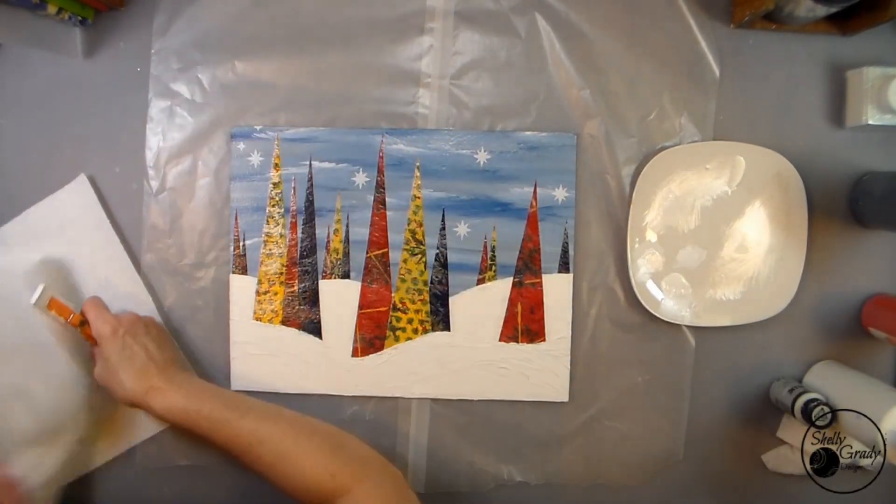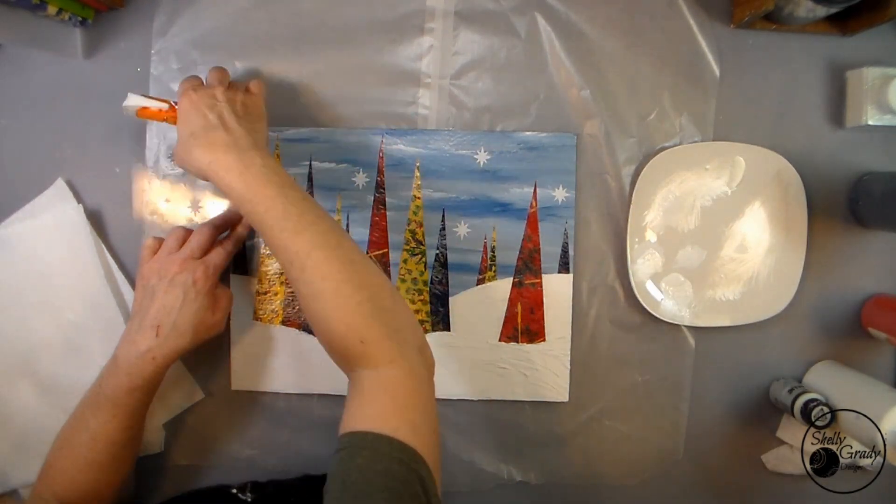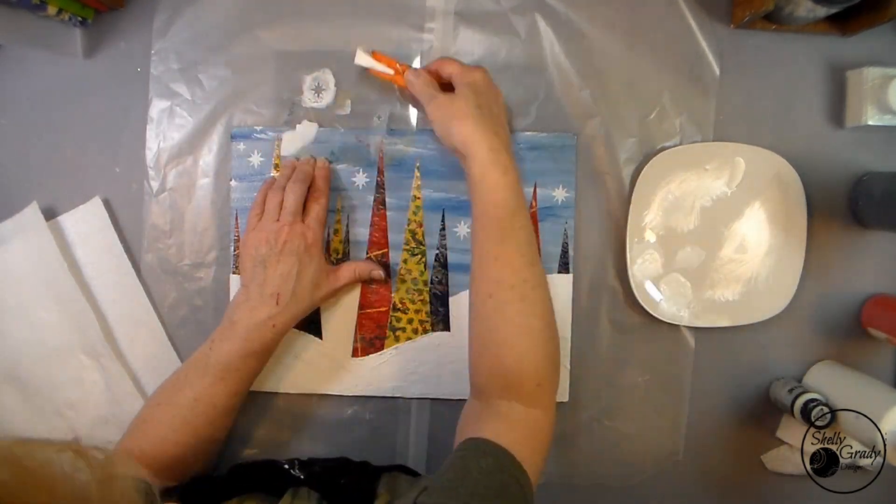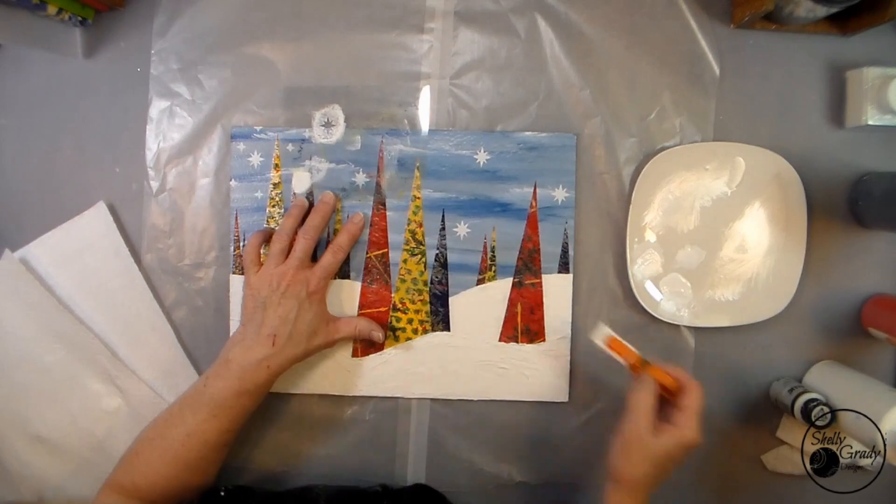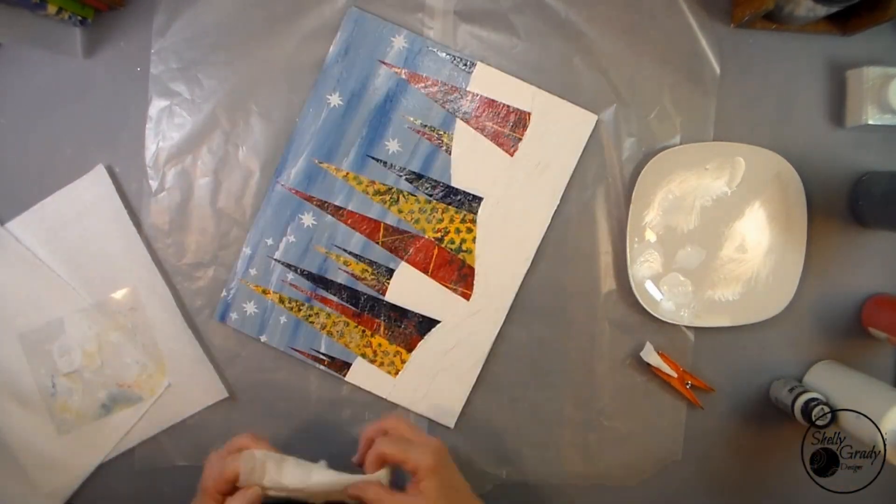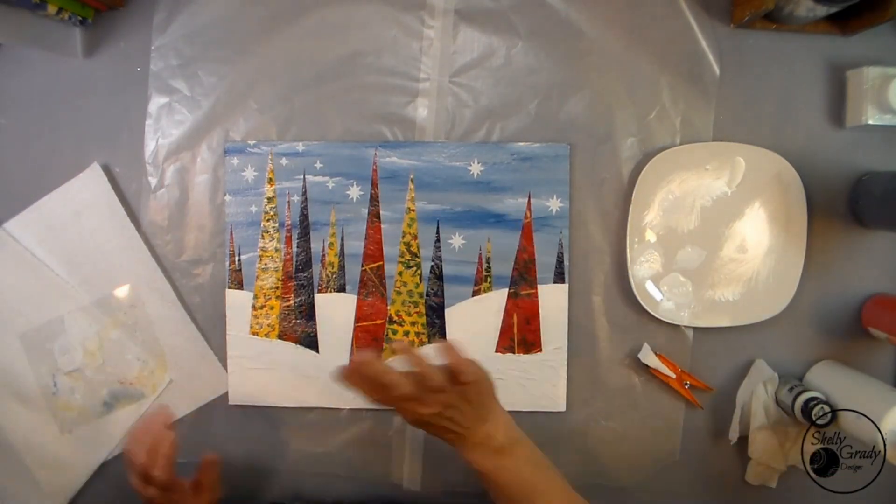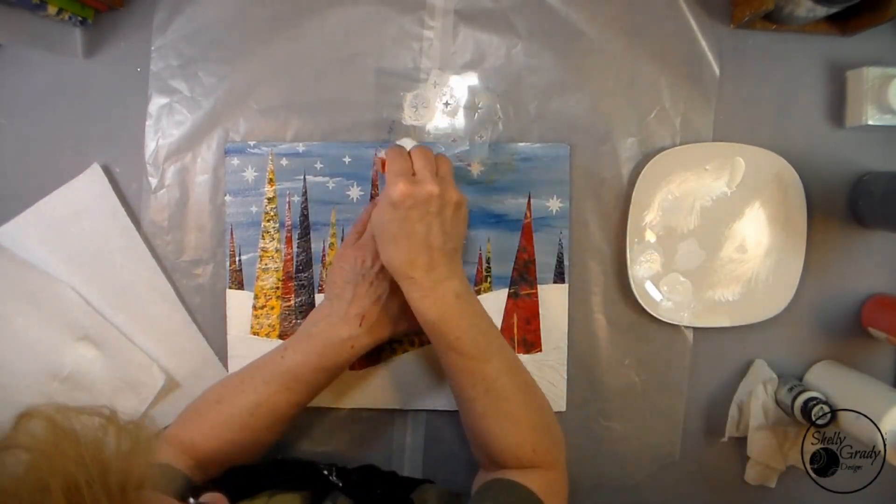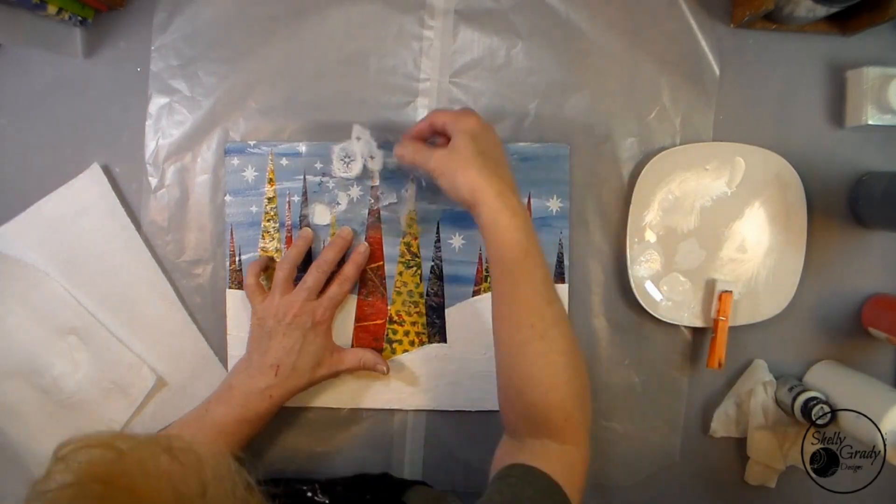Using my star stencil and some white paint and a dauber, which to me is a makeup sponge with a clothespin with about a half inch sticking out the bottom, I'm just going to apply some stars in that beautiful sky.